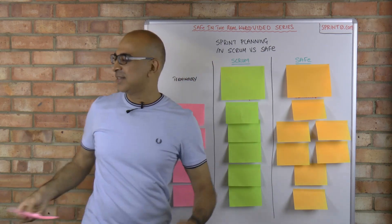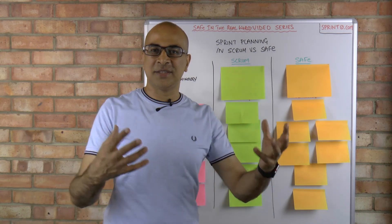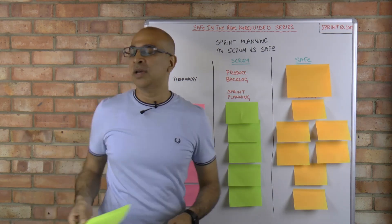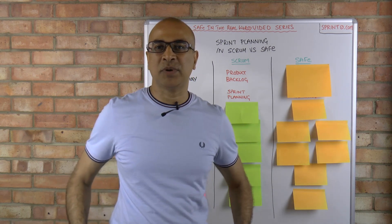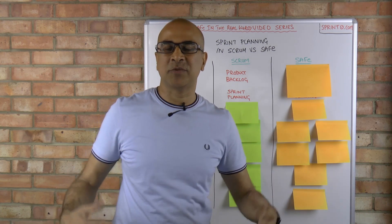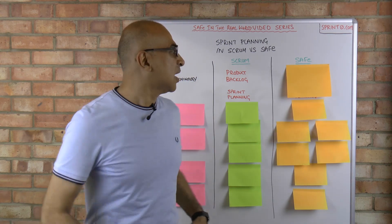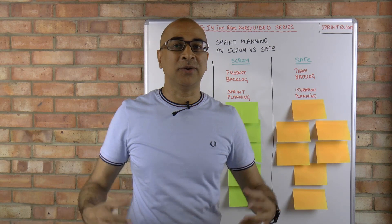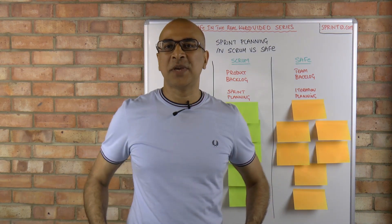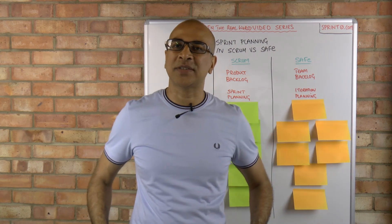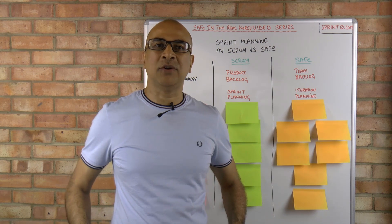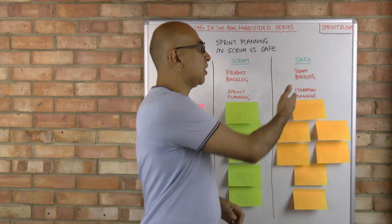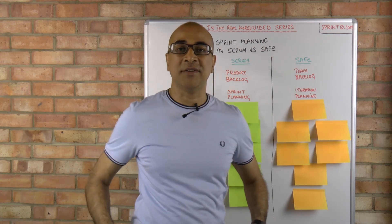Number one, as you may have guessed: terminology. There is a difference in terminology in sprint planning in Scrum versus SAFe. Scrum uses the term 'product backlog' and 'sprint planning', because you're expected to have a single product that the team is working on. In SAFe, we have multiple tiers of backlogs — a portfolio backlog, a program backlog, and a team-level backlog — so it's referred to as the 'team backlog'. And to keep it framework agnostic, it's referred to as 'iteration planning' rather than sprint planning in SAFe.